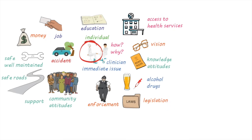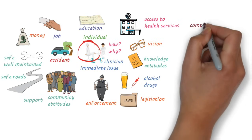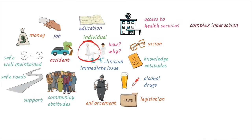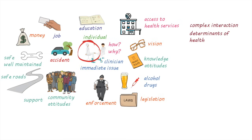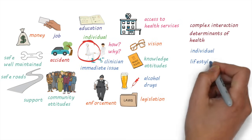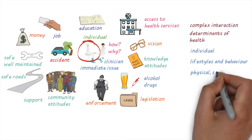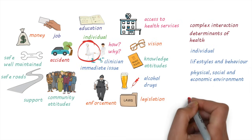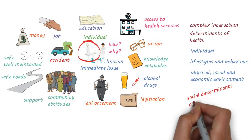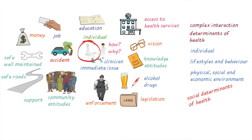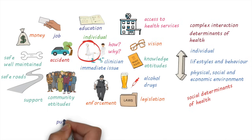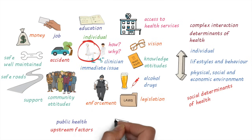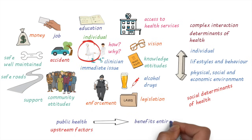As you can see from this example, health is determined by a complex interaction between many different factors or determinants of health. These include individual characteristics, lifestyle and behaviors, and also the physical, social and economic environments — the social determinants of health. In order to make a difference in health, there's action needed across all the different determinants. Public health focuses on these upstream factors to make changes that can benefit the health of the population as a whole.